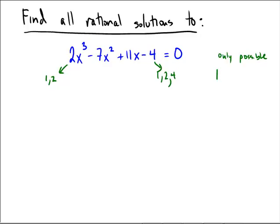So, 1 over 1, 2 over 1, 4 over 1, 1 over 2, 2 over 2 which is just 1, and 4 over 2 which is just 2. We only have a handful of these to check. We only have to check plus and minus 1, plus and minus 2, plus and minus 4, and plus and minus 1/2, because those are the only ones that are even possible by the rational roots test.